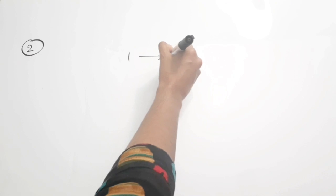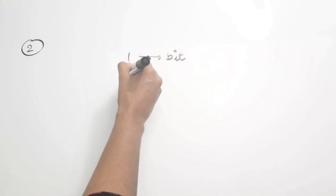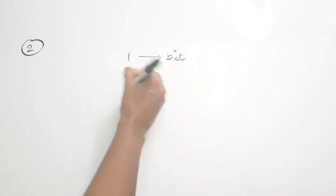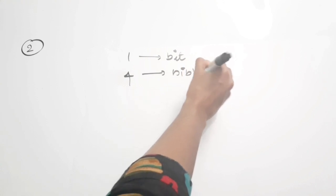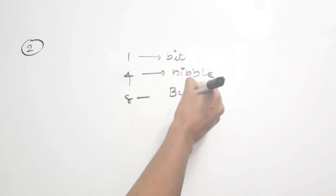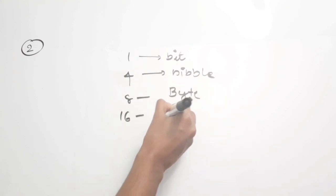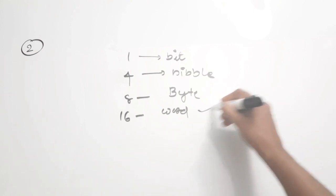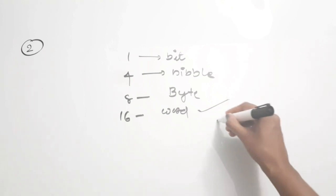One number represents a bit — can be 1 or 0. Nibble consists of 4 binary numbers. 8-number combination is byte. 16 is word. These are the standard representations: 1 for bit, 4 for nibble, 8 digits constitute byte, and 16 constitute word. So here they are asking for 16 distinct values — it is nothing but a word. The correct answer is option C, word.